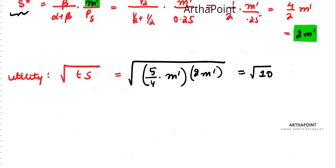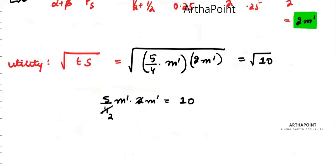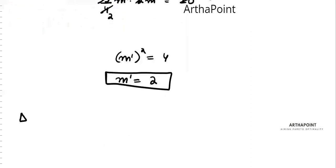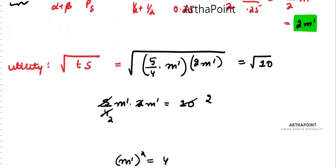But after this I want my original utility. And what was my original utility? It was root 10. So I want the same utility equivalent to root 10. So we will, if I square on both sides, I will get 5 by 4 m dash into 2 m dash is 10. So I will get m dash square is 4, so m dash should be 2. So if I want him to get the same level of utility, his new income must be 2. So the change in income should be m dash, his new income, minus old income, 2 minus 1, which is 1.